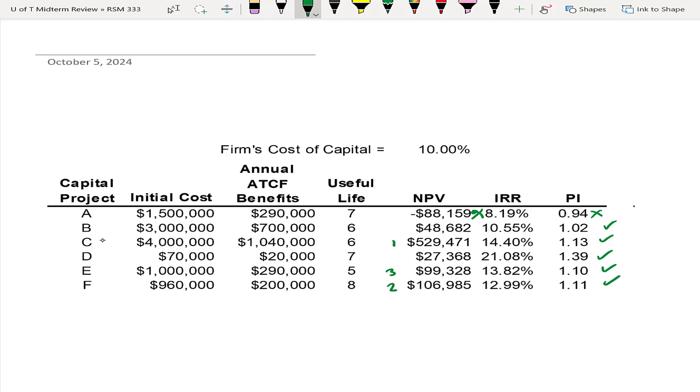What if you looked at internal rate of return? Then the first one would be D, the second one would be C, and the third one would be E.